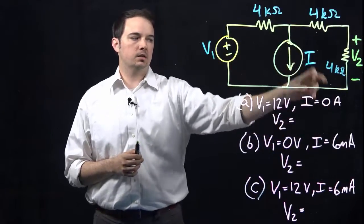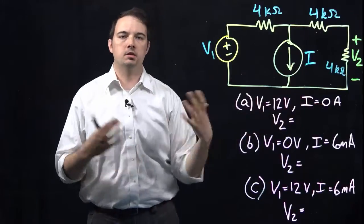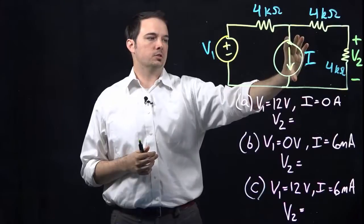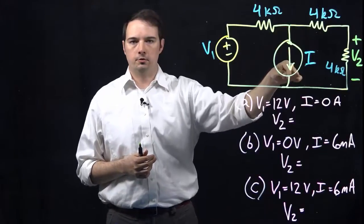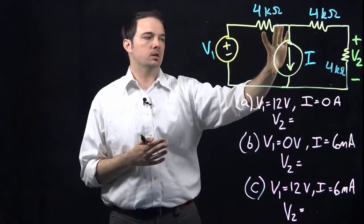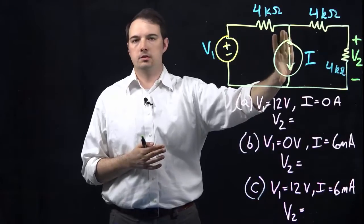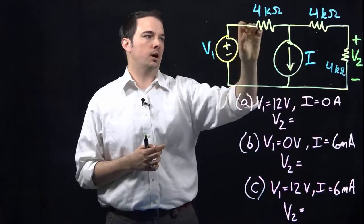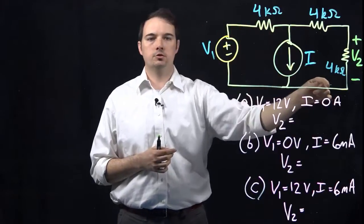Well, if my current source I is set to equal to zero amps, that basically means it's deactivated. So if this source is deactivated, if there's no current traveling through this branch, then we could view this entire circuit as though this is an open circuit right here, which means that this voltage V1 has to be dropped entirely across these three resistors, which happen to be just in a single series loop.